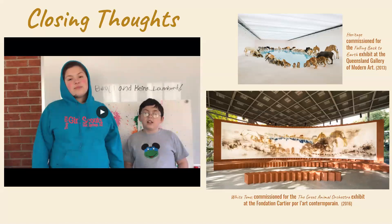So what they were talking about — the artwork Bo was describing — is White Tone at the bottom of the screen. White Tone was commissioned for the Great Animal Orchestra exhibit, created in 2016. It's a gunpowder on paper artwork. This is artwork by Tsai, and it was also inspired by one of his previous installations. At the top of the screen you see Heritage, which was commissioned for the Falling Back to Earth exhibit at Queensland Gallery of Modern Art in 2013. He used life-size replicas of animals at a watering hole — both predators and prey humbling themselves for water at the same time — as inspiration to create his gunpowder artwork.